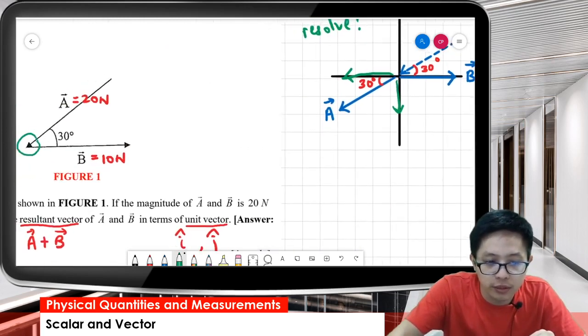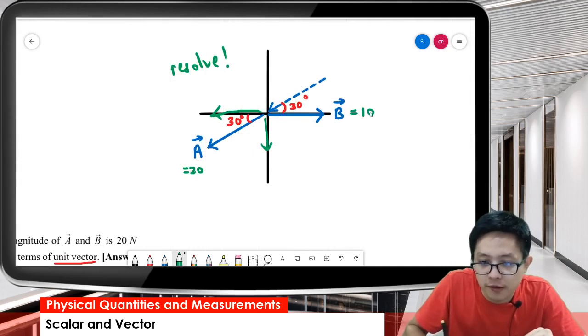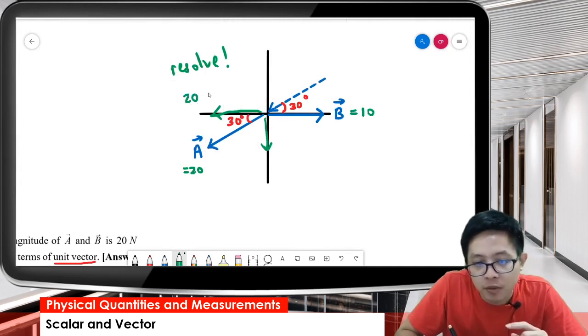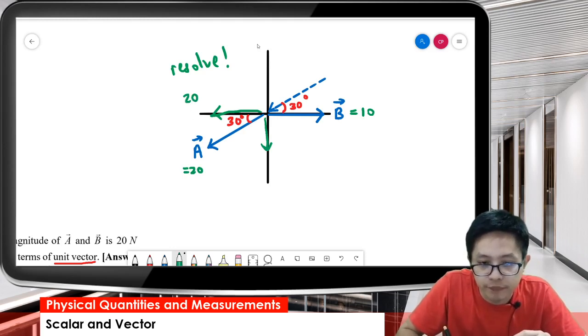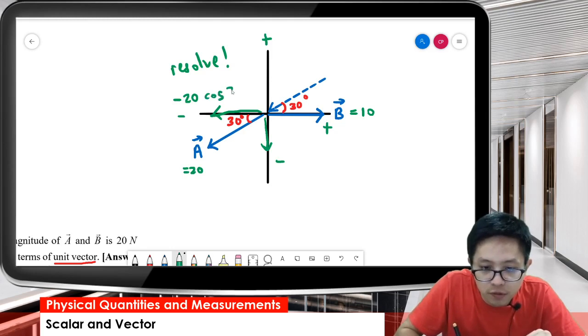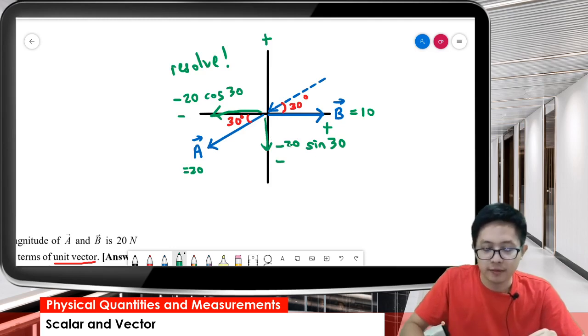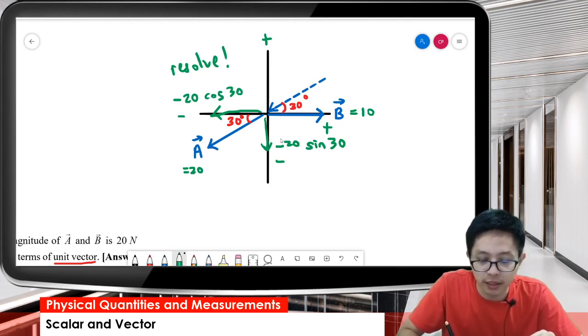For the x component, A is 20 Newton, B is 10. The direction is very important: going upward is positive, right is positive, downward negative. So the vector for x component is negative 20 cos 30. For the y component, it's going downward also negative, so negative 20 sine 30. These are components of A, we resolve them.